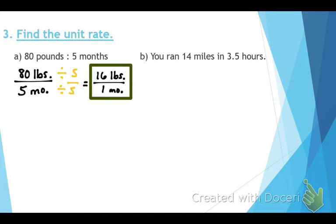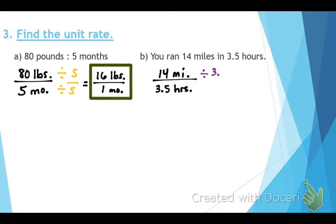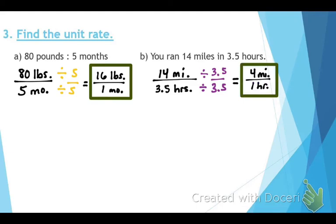Try problem B on your own. The answer is 14 miles per three and a half hours. Divide both top and bottom by 3.5 to get the denominator to one. The result is four miles per one hour — a unit rate always has a denominator of one, with units in both numerator and denominator.